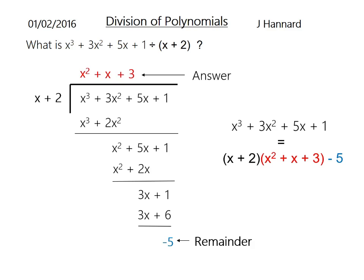x + 2 times x² + x + 3, and then minus 5 off at the end will give you your original cubic. If you have a couple of minutes to expand that bracket and take 5 off, you will get that cubic. That is what we're talking about today. Let's do another example.